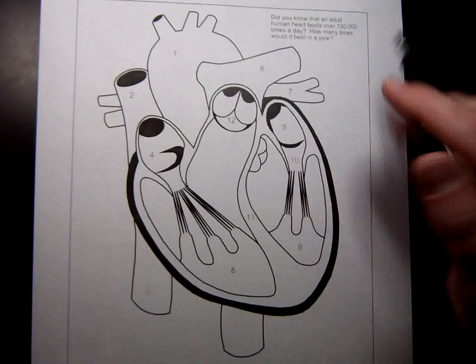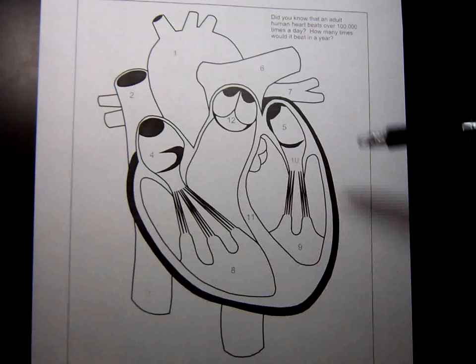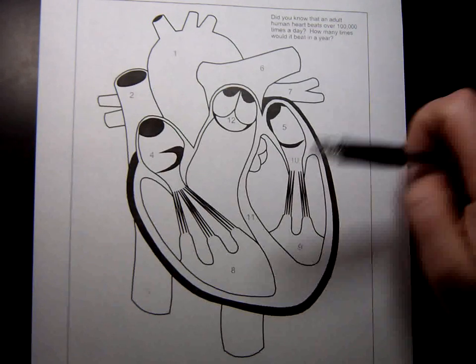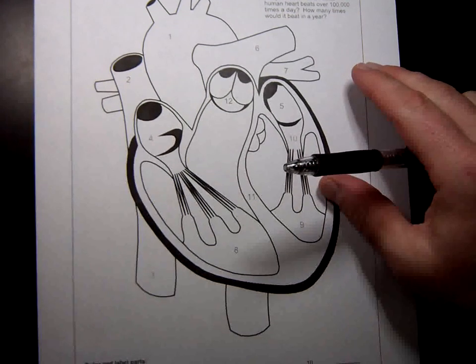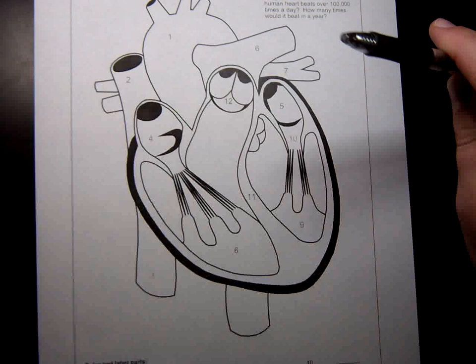Alright, so we're going to do some heart anatomy and physiology today. Here's a coloring sheet I found on the web that was pretty close, and so we're going to use that one. The heart's got four main vessels, four valves, and four chambers. We'll start with the chambers.